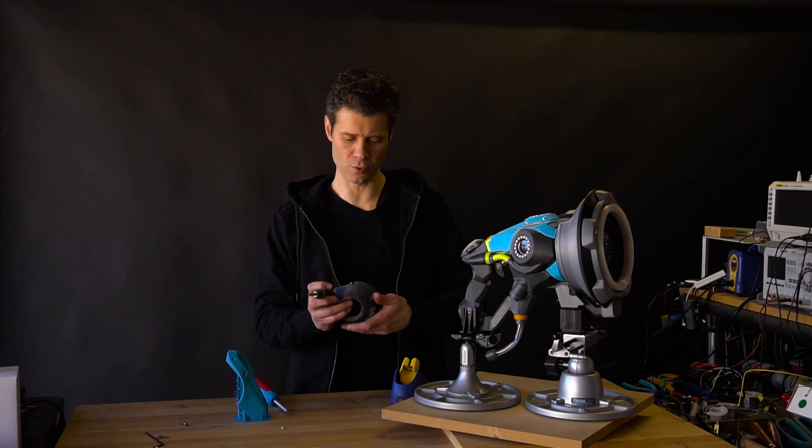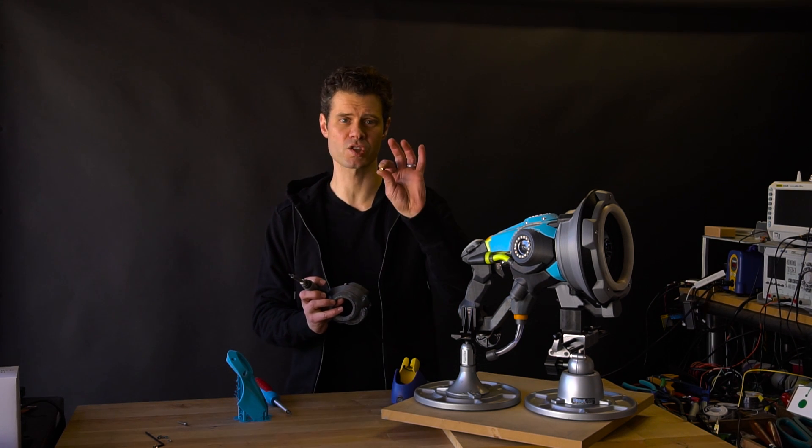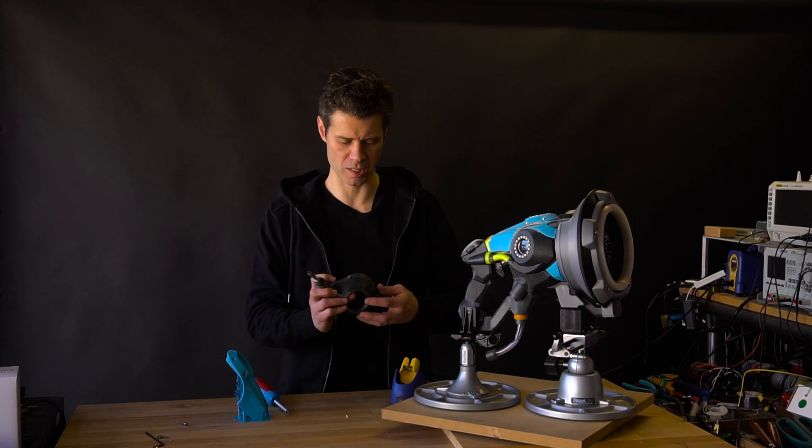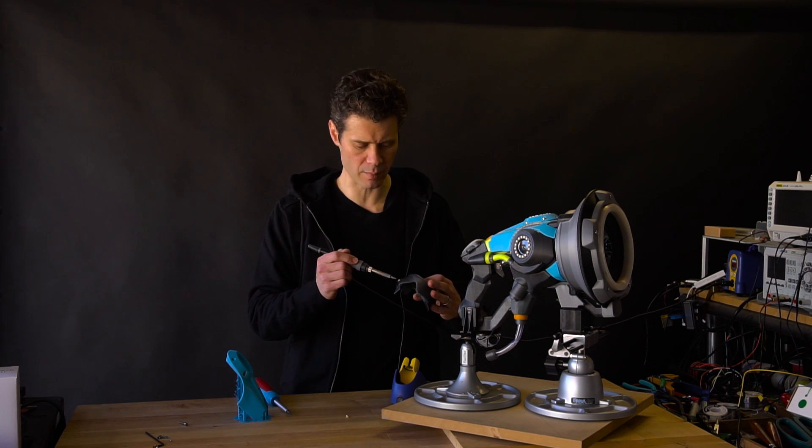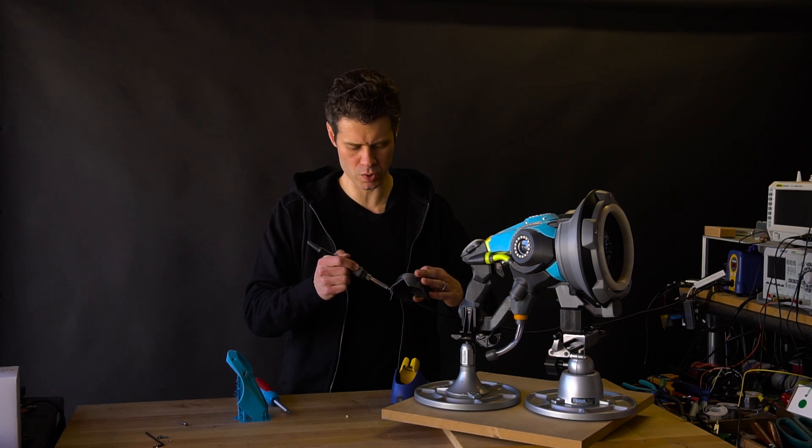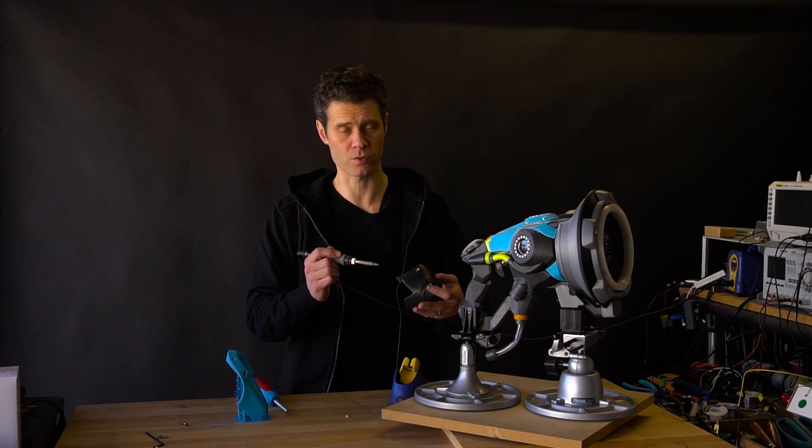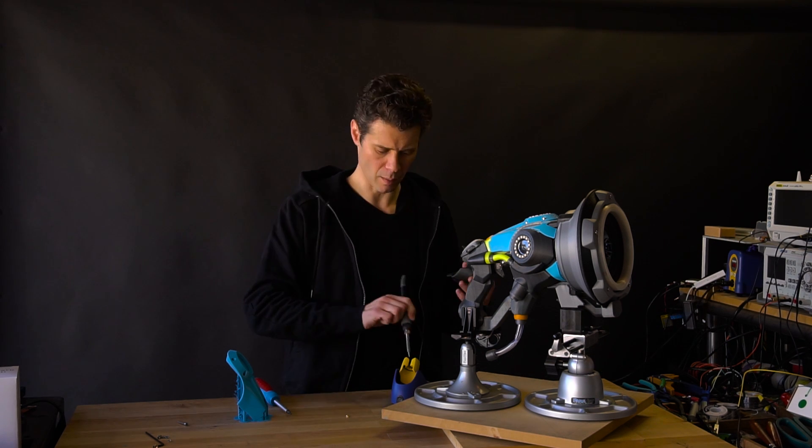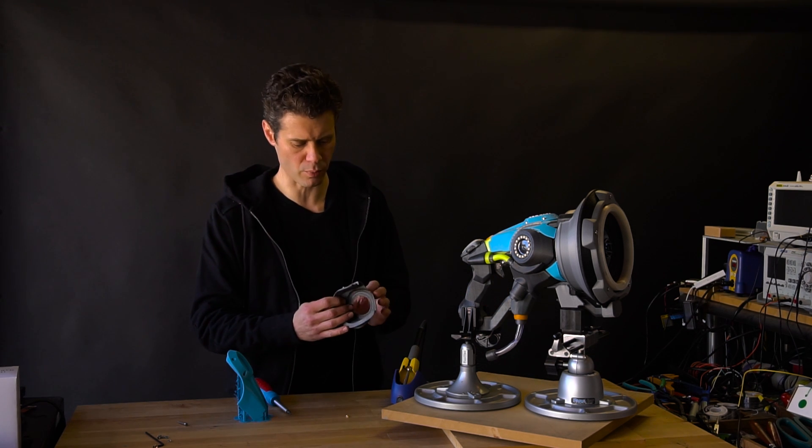The first tip is for using heat set brass inserts in your 3D printed parts. Now you can put holes in objects and then put screws through those holes and use nuts on the other side to fasten them. That works great, but this method is also a pretty cool one.